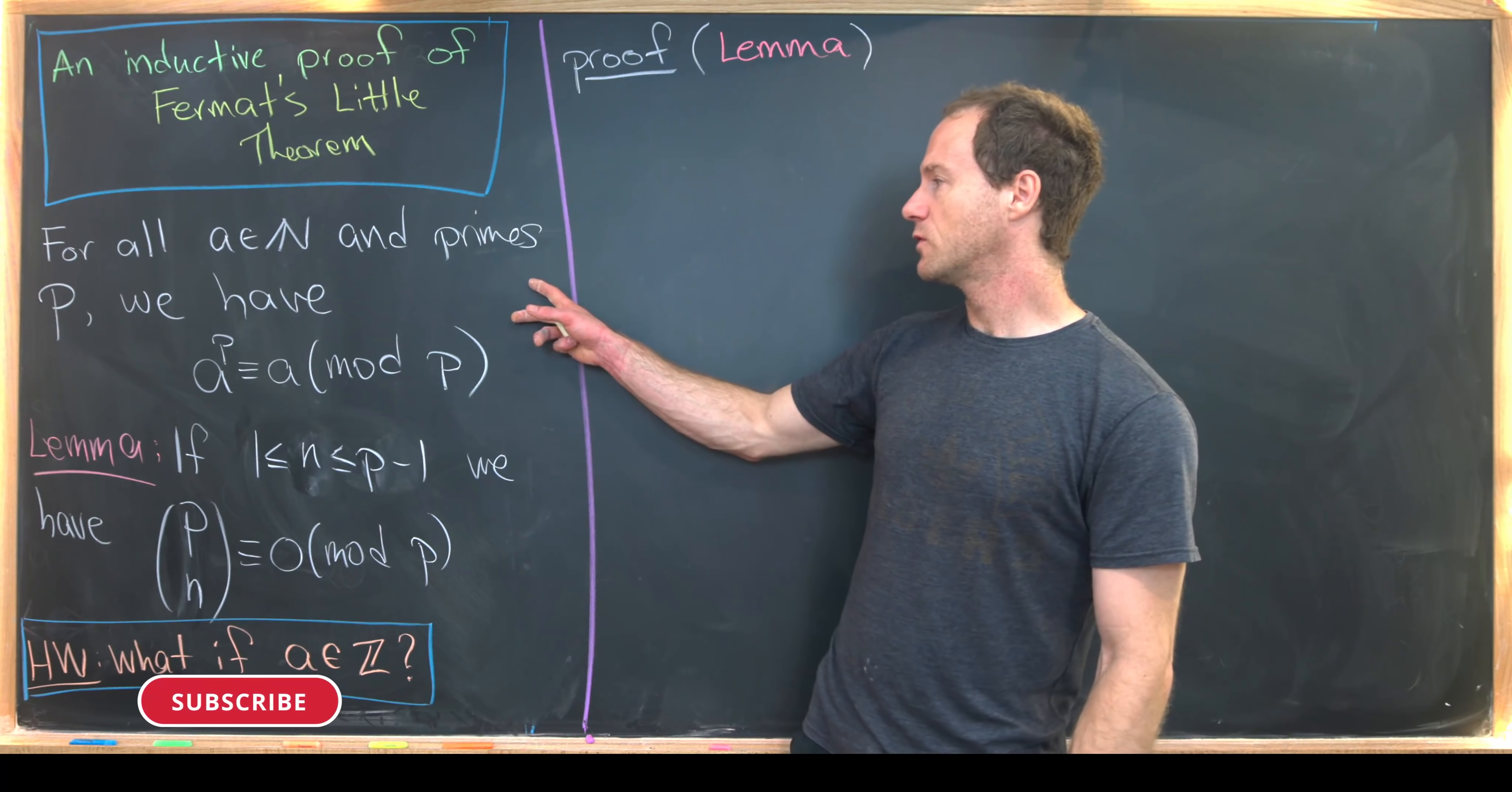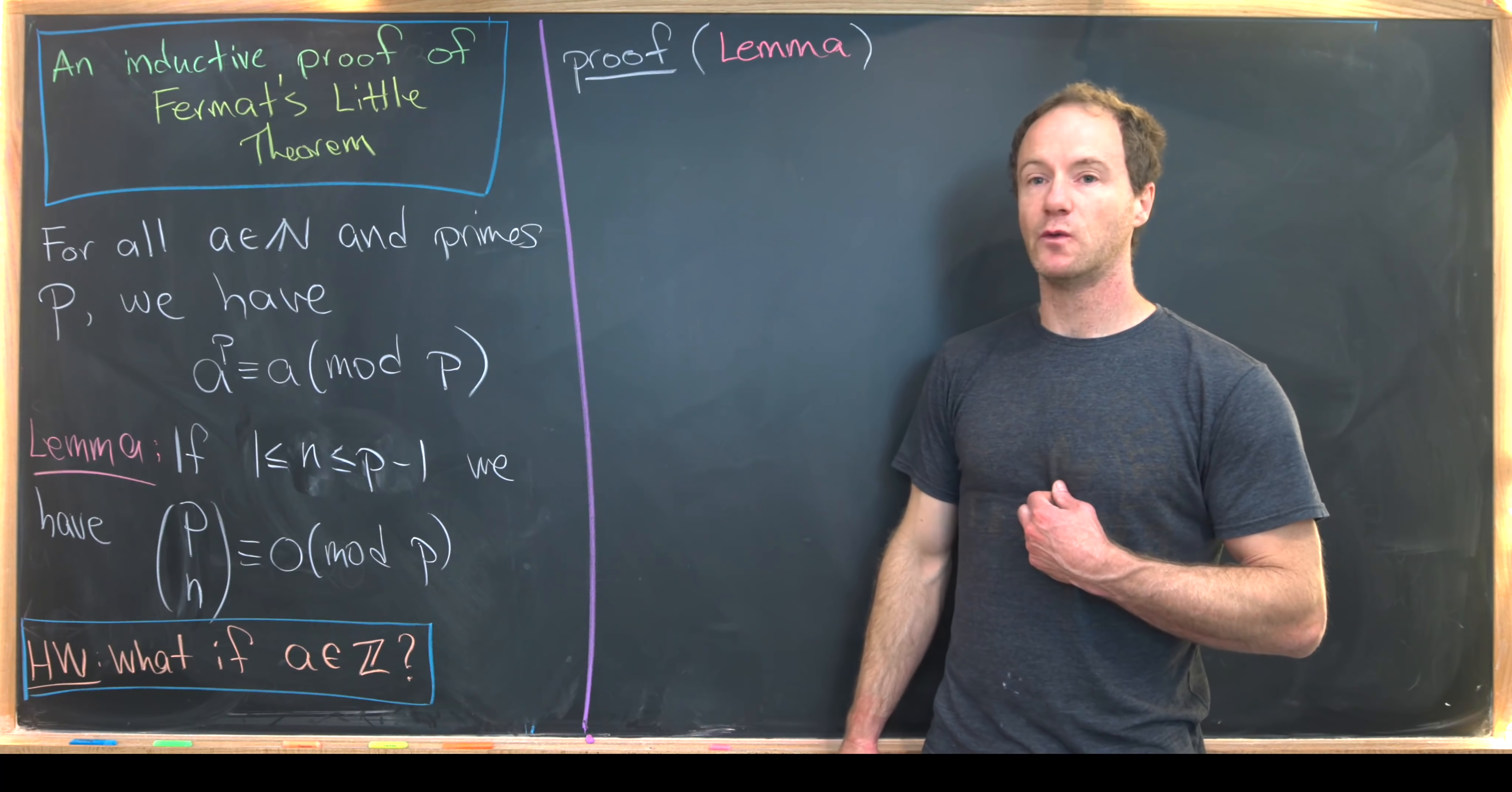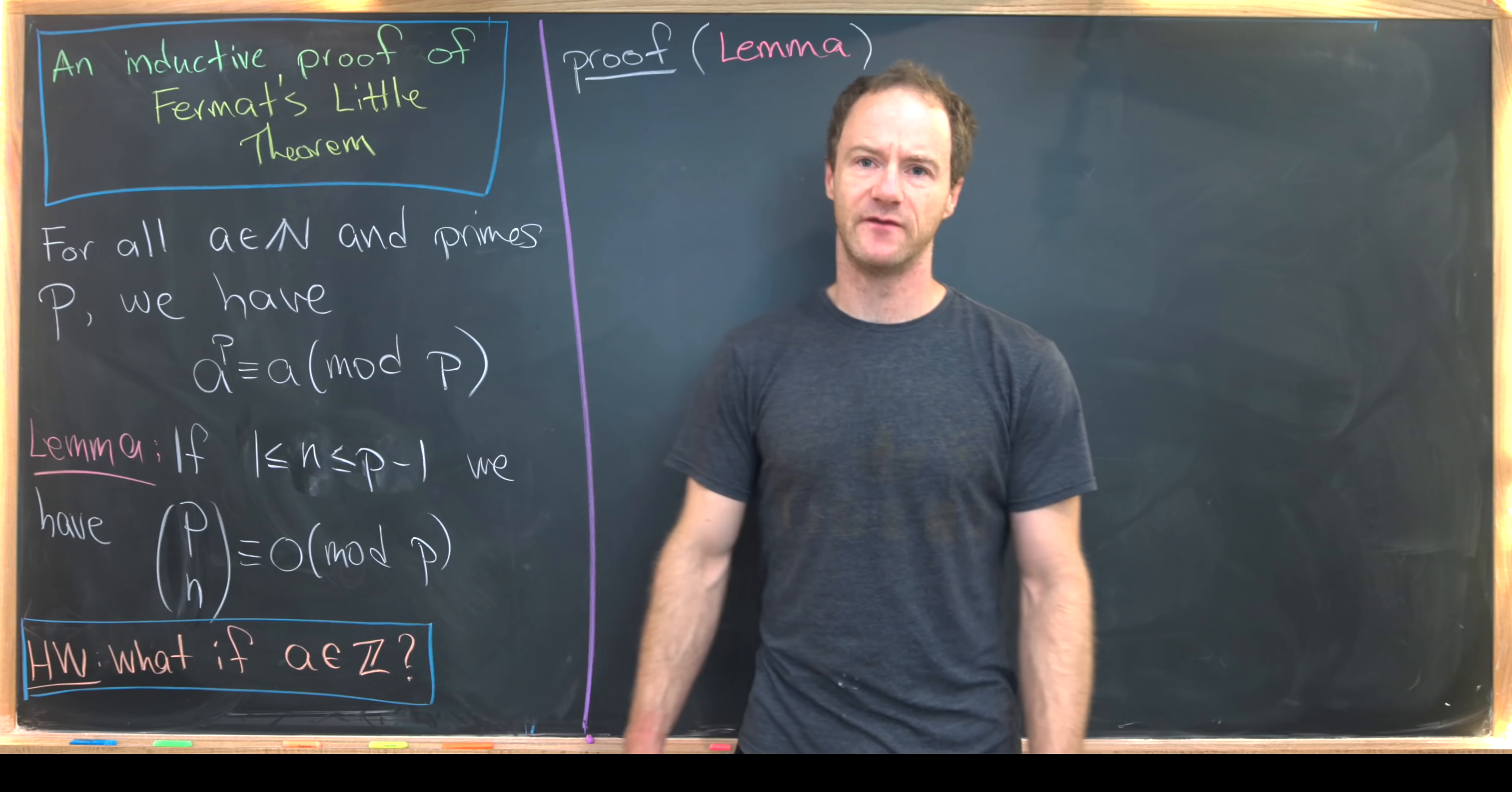So the proof that we'll take will heavily rely on the following lemma. It says for all N between 1 and P minus 1, we have the binomial coefficient P choose N is congruent to 0 mod P. So let's do the proof of that first.